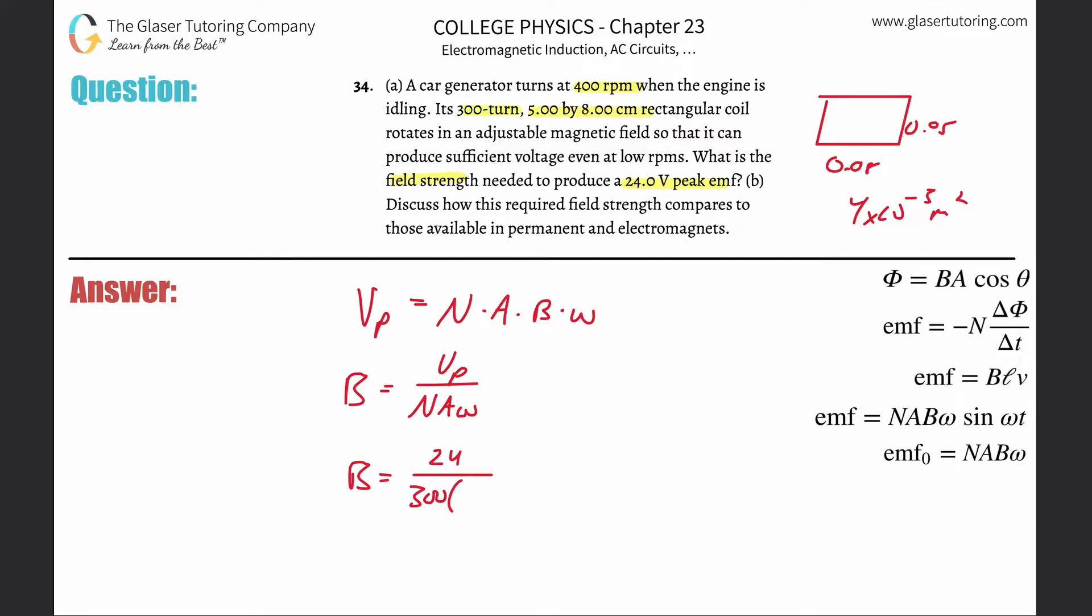And then all we need to do is plug it in. So that's going to be 4 times 10 to the minus 3, and then we need to plug in the angular velocity. Remember, radians per second? They didn't give it to us in radians per second, so we got to do a conversion.